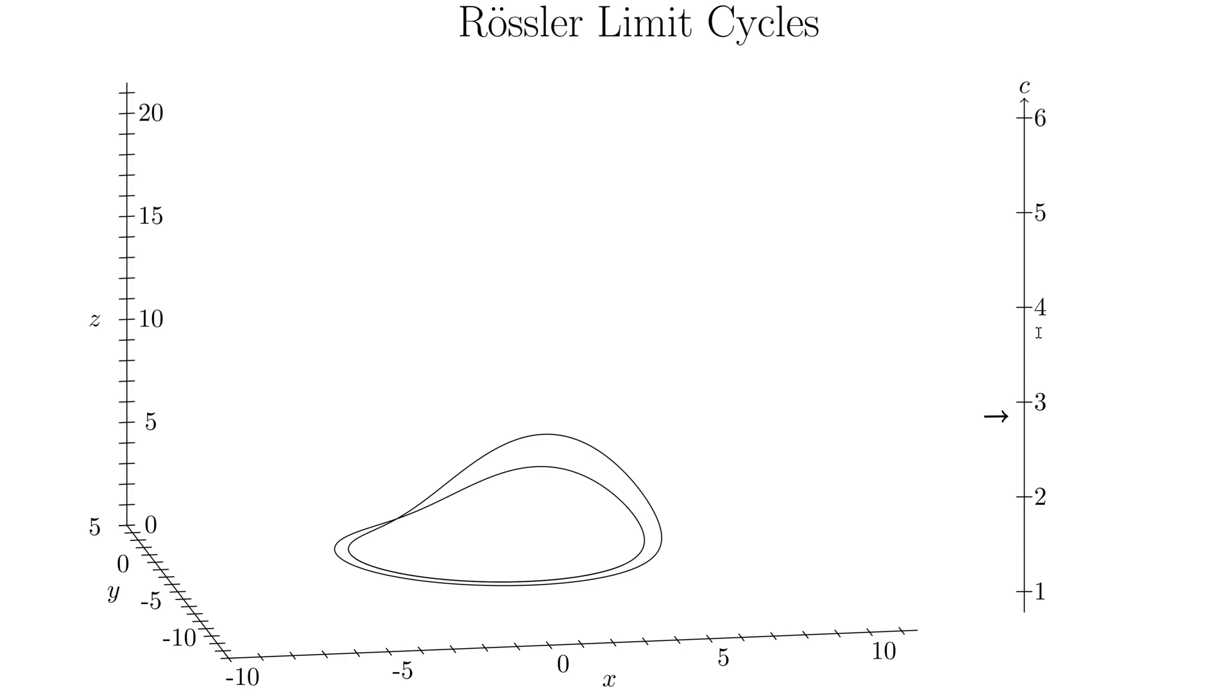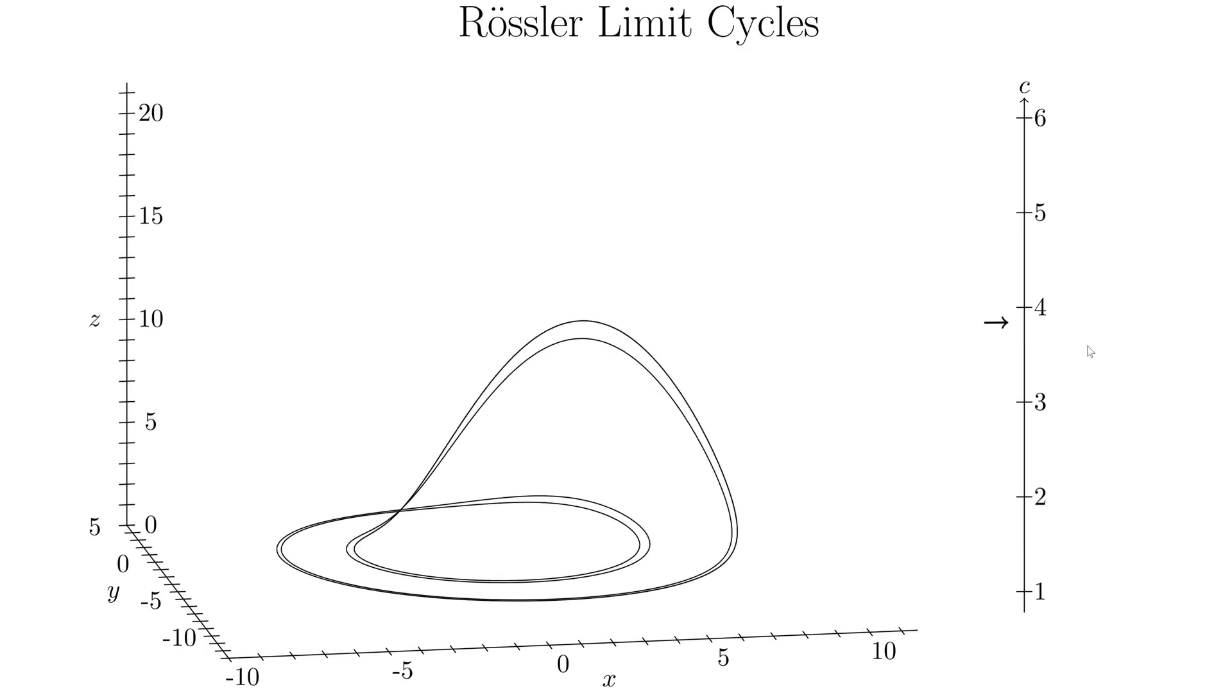And now I think somewhere around a little bit before 4, we're going to see that again. So the limit cycle does keep changing as you change the parameter c. And here, coming up to the next period doubling bifurcation. There we go. So it's just separating. And now it does it again. So now it used to be this little tiny loop. As c has changed, the loops have gotten a little bit bigger diameter. But it's also doubling itself every once in a while.